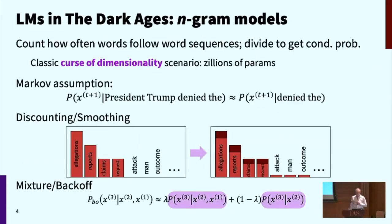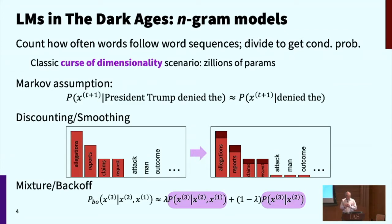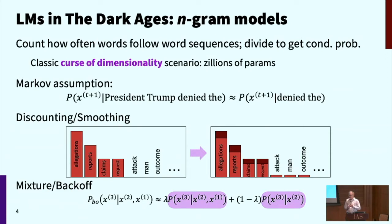How do you build language models? In the Dark Ages — prior to approximately 2012 — the way people built language models was to get a lot of text, count up how often different sequences of words occurred, and get conditional probabilities by dividing how many times the sequence 'the students opened their books' occurred compared to how often the sequence 'the students opened their' occurred.